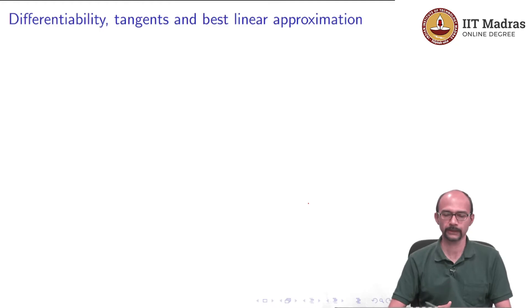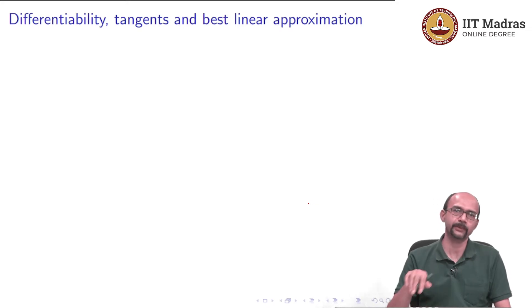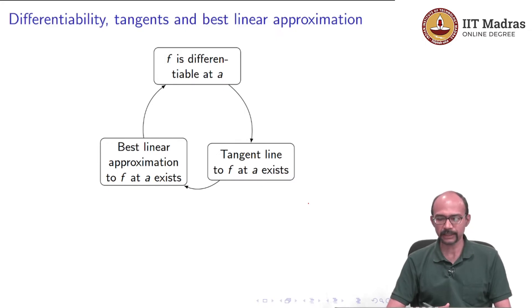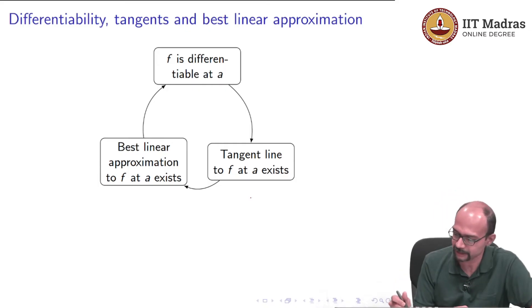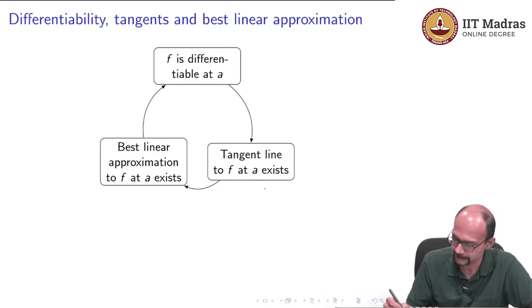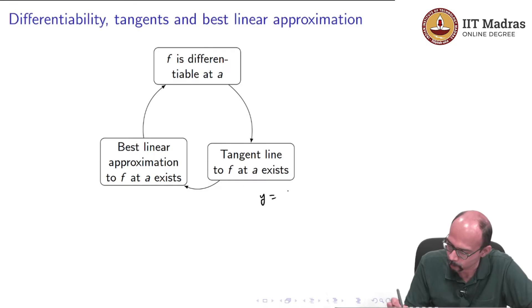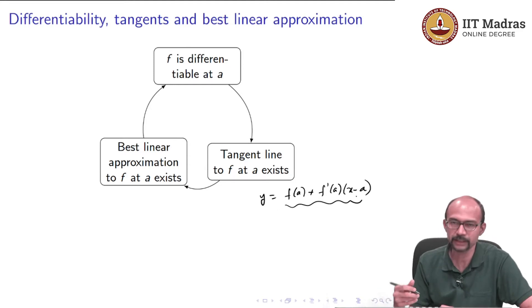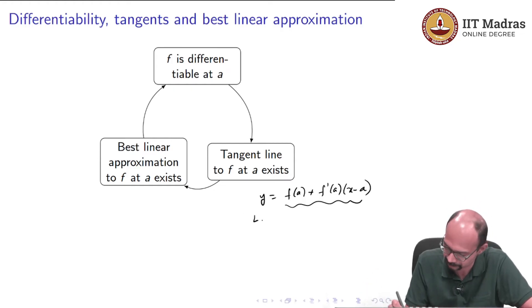Let us first talk about the notion of differentiability and what it means for tangents and the best linear approximation. These all went hand in hand: if f is differentiable at a, that is the same as the tangent line to f at a existing, which is the same as the best linear approximation to f at a existing. The equation of the tangent line was y = f(a) + f'(a)·(x−a), and this expression, viewed as a function of x, is the best linear approximation of f close to the point a.